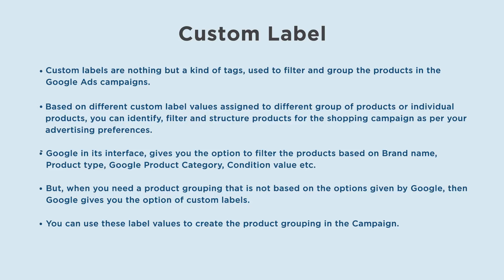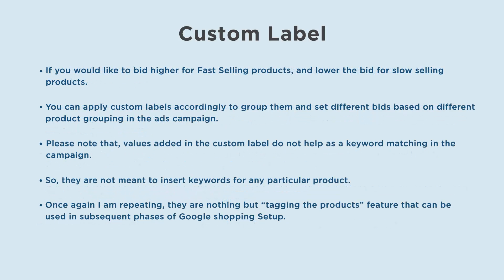Google in its interface gives you the option to filter products based on brand name, product type, Google product category, condition, value, etc. But when you need a product grouping that is not based on the options given by Google, then Google gives you the option of custom labels. You can use these label values to create product grouping in the campaign.